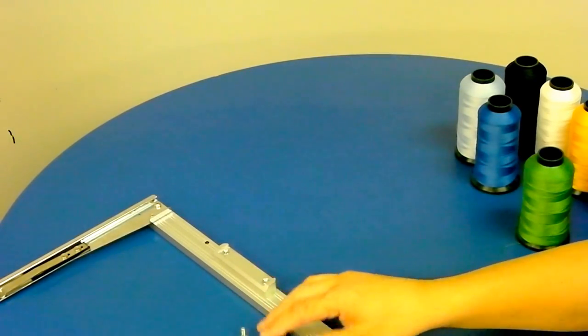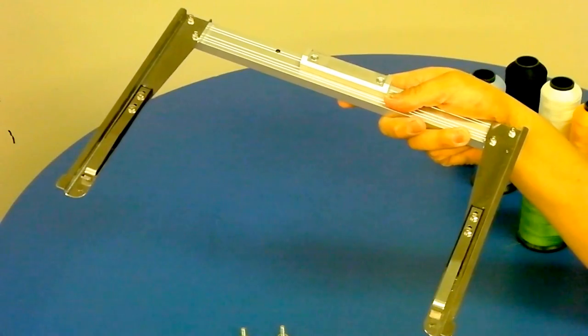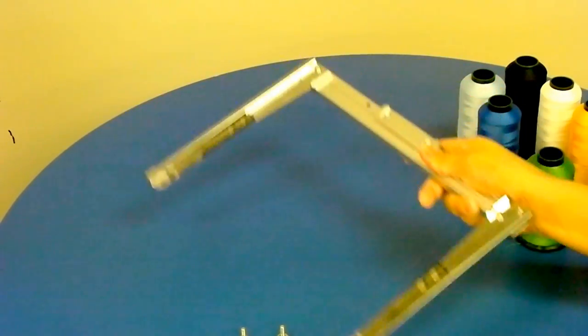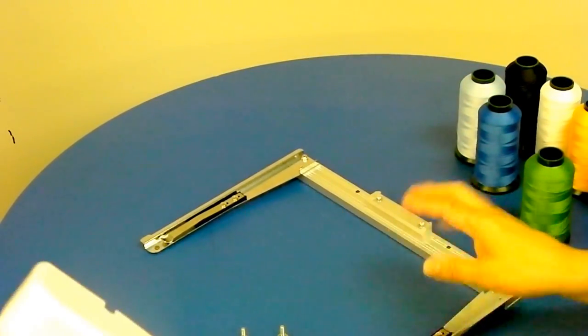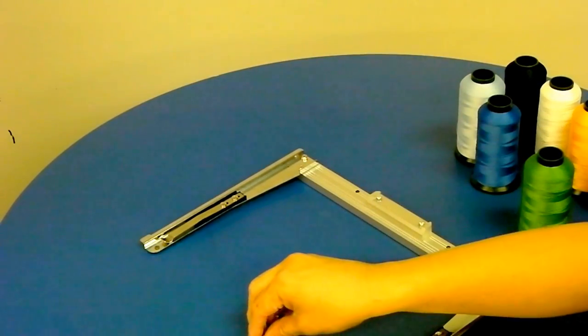And finally, you've got the tubular arm here which holds most of the hoops except for the cap system. That attaches to that pantograph that screws on here with the two thumb screws that are left.